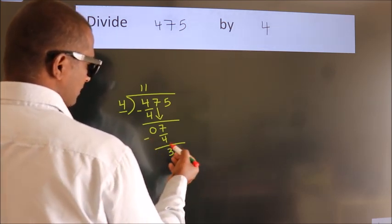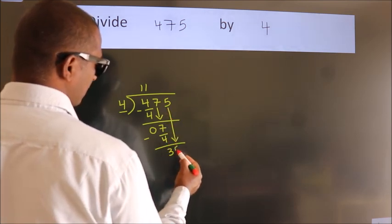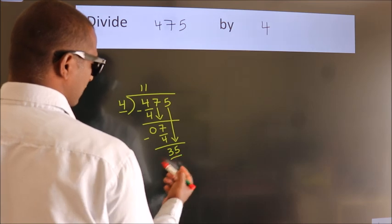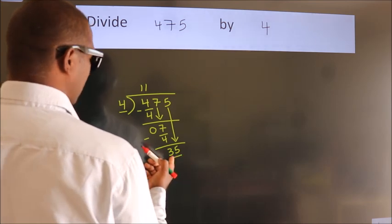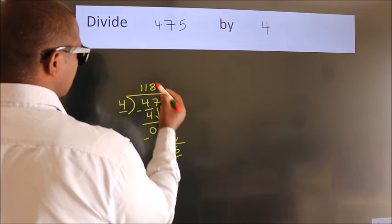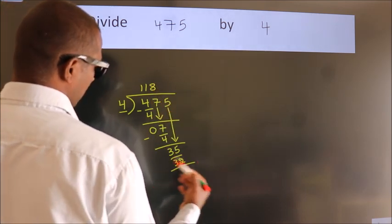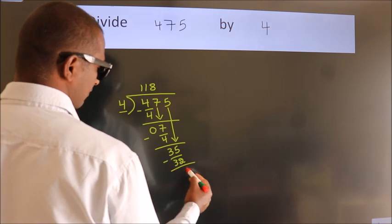After this, bring down the beside number. So 5 down, so 35. A number close to 35 in 4 table is 4 8s, 32. Now we subtract, we get 3.